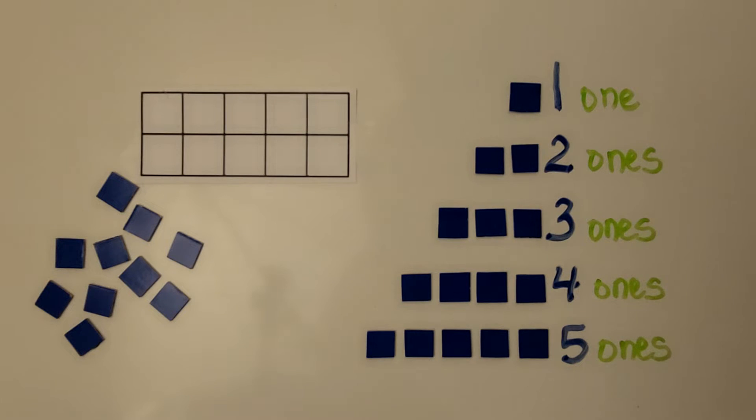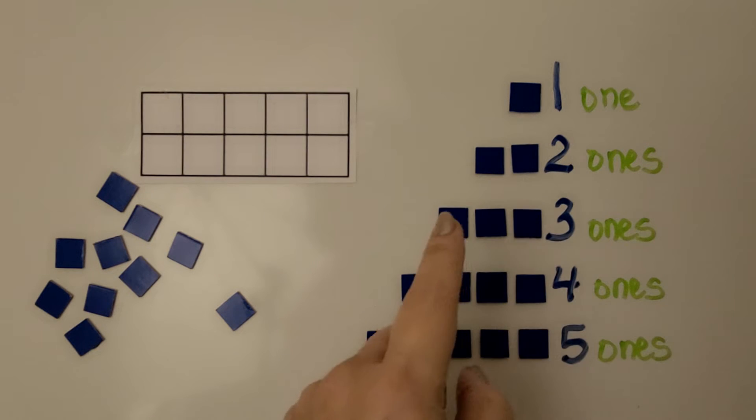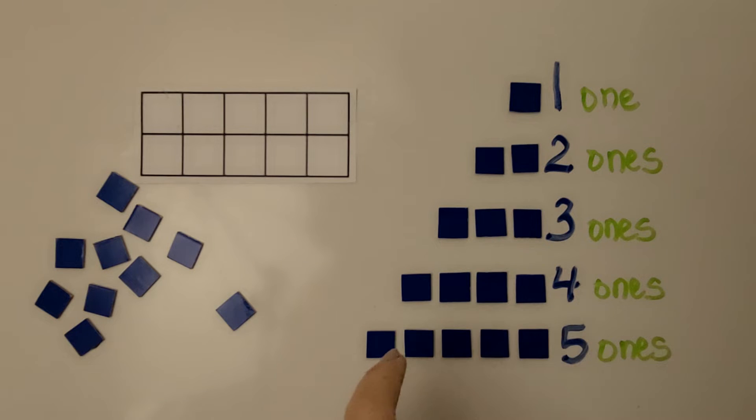Here we have a ten frame and we have some counters. Each counter is a one. We have one one, two ones, three ones, four ones, five ones, and we could keep going.